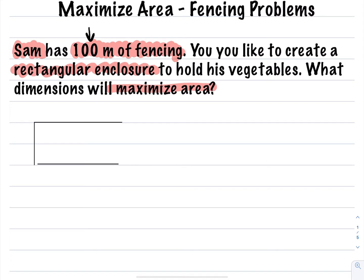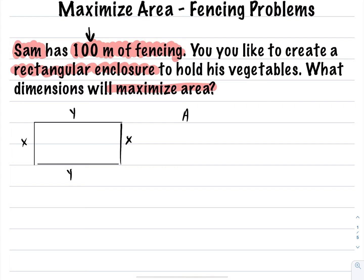So we have a regular rectangular structure. We don't know the dimensions, so I'll label these sides with x's — because it's a rectangle, those will be the same length — and likewise I'll label these with y's. What we want to do is maximize the area. The area of a rectangle is length times width, or in this case x times y. The problem is you can't maximize two variables, so I have to get this down to one variable — either express everything as x or as y.